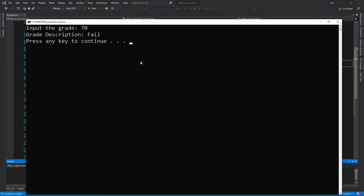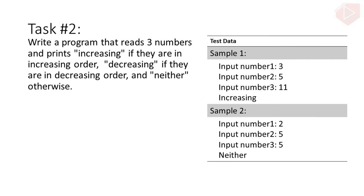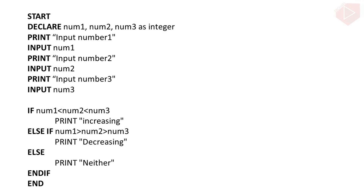Now let's do another exercise. I want you to write a program that reads three numbers and prints 'increasing' if they are in increasing order, 'decreasing' if they are in decreasing order, and 'neither' otherwise. In sample 1, if the user inputs 3, 5, 11, the program will print 'increasing'. In sample 2, if the user inputs 2, 5, 5, the program will print 'neither'. Here is our pseudocode: first prompt the user to input three numbers, save the inputted numbers to variables, then use a series of if-else-if statements to check whether they are increasing or decreasing.